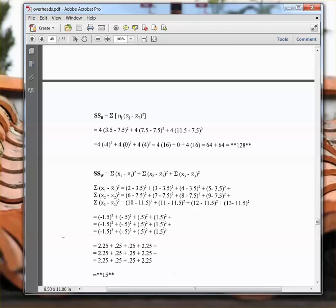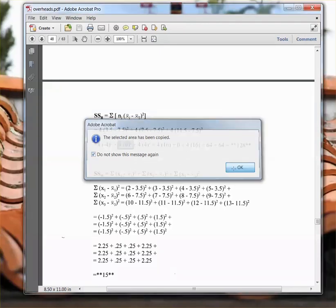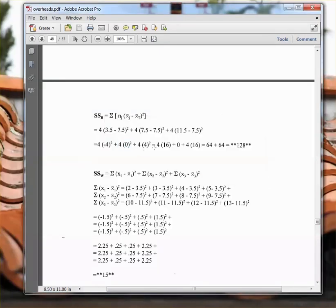So we do the subtraction in the parentheses first, and you can see that this middle term is going to fall out because they were the same value. And then, so we have minus 4 squared, 16, 4 squared, 16, and so you add those up, you get 128.